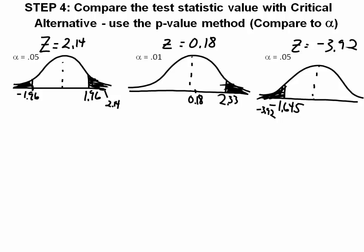Let's look at a couple of examples. In the first case, our alpha value is 0.05, our computed z-value is 2.14, and we have a two-tailed test. In our second situation, we have an alpha value of 0.01 and our computed z-value is 0.18. In our third case, we have an alpha value of 0.05, our computed test statistic value is negative 3.92, and we have a lower-tailed test.